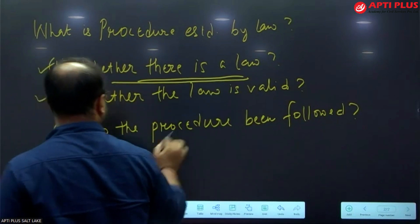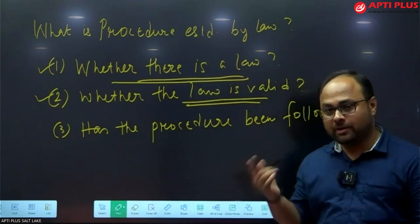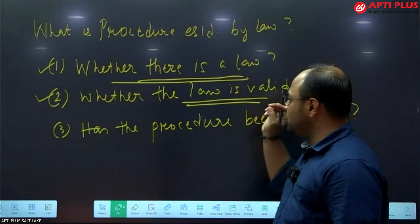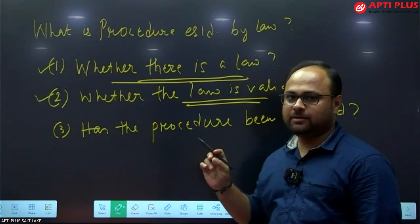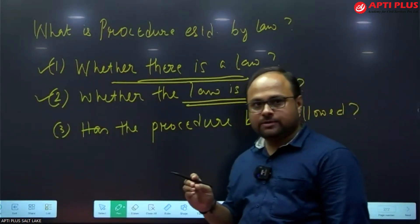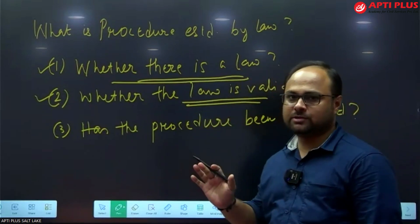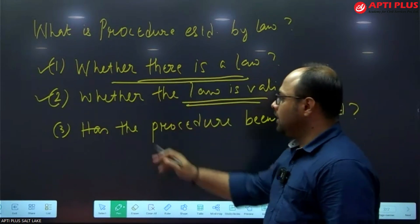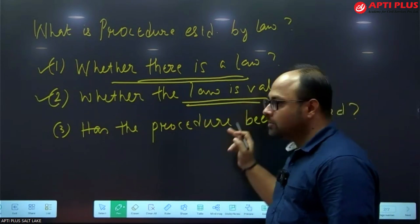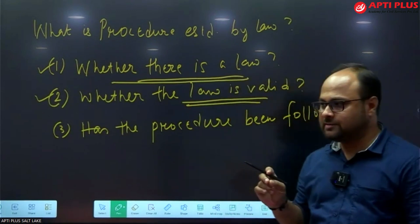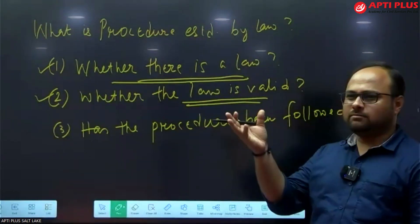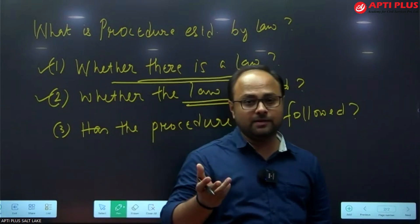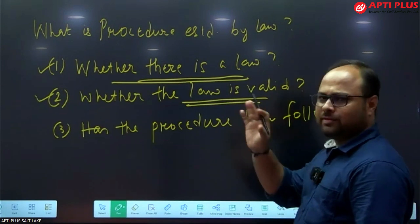The second question the judiciary examines is whether the law is valid — that is, whether the law has become obsolete or not. The third question is whether the procedure has been followed as per the law in the arrest or detention. Taking the example of the partial decriminalization of same-sex relations under Section 377, we will come to that in later classes.